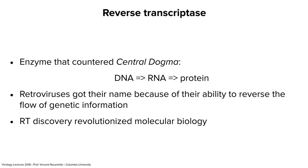That enzyme is reverse transcriptase, so called because it countered the central dogma of biology — that information flows from DNA to RNA to protein — formulated largely by Watson and Crick. When reverse transcriptase was discovered, Francis Crick said, 'I never said there was a central dogma.' The reverse transcriptase reverses the flow of genetic information: you go from RNA to DNA. That's why it was called reverse transcriptase, and those RNA tumor viruses were then called retroviruses — a better name because they contain reverse transcriptase.